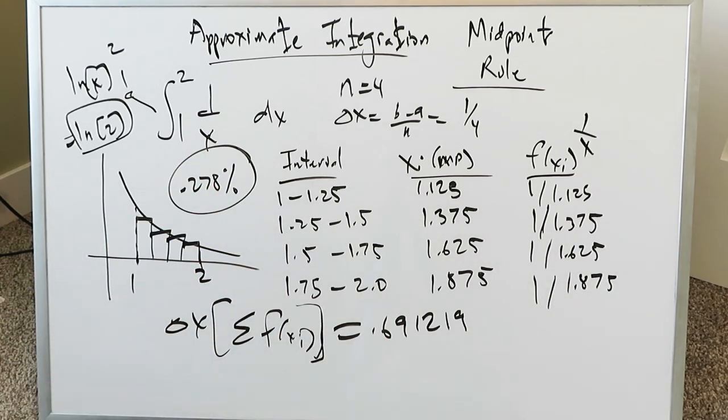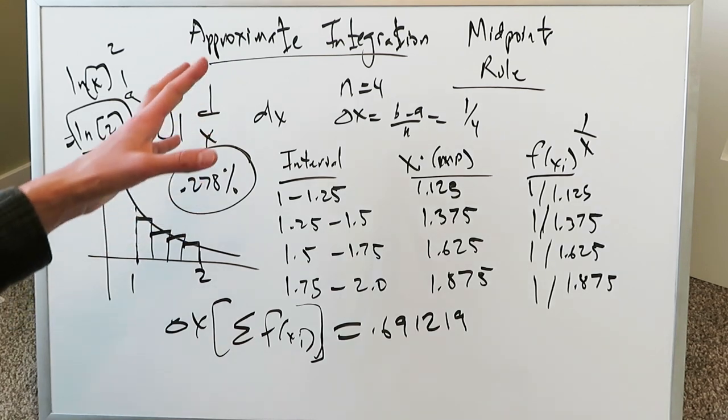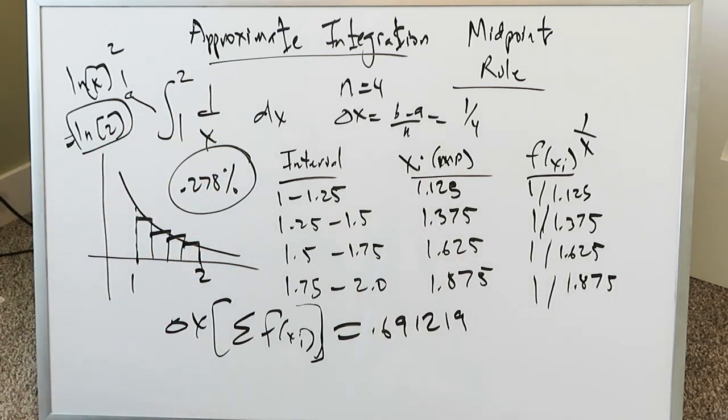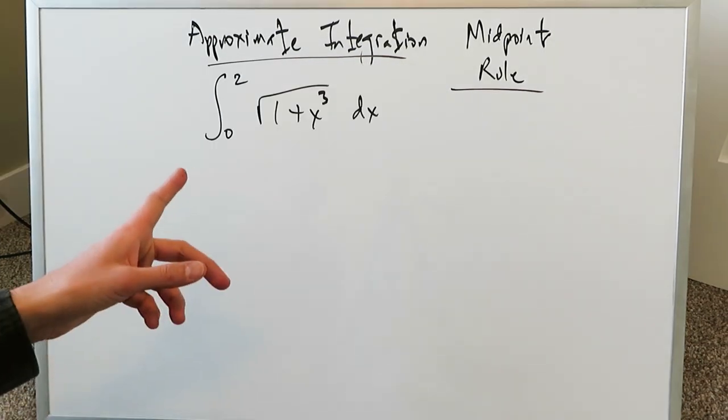Let's look at one more example. We'll again focus here on midpoint rule. Remember there are other rules which come into play with approximate integration. There's a trapezoidal rule. There's also the Simpson rule. All of that we can look at but right now we're focusing on perhaps the more important rule which is a midpoint rule. Let's look at this one.